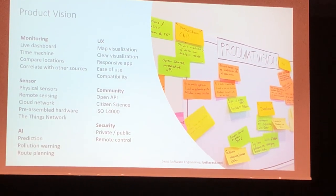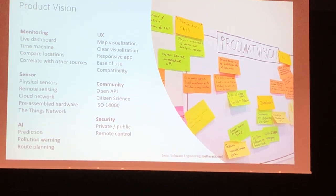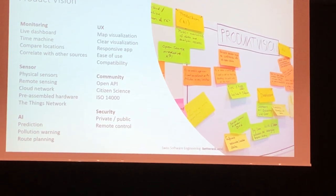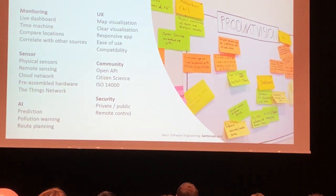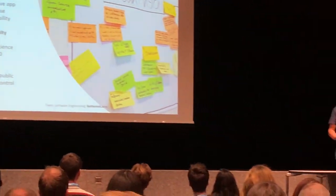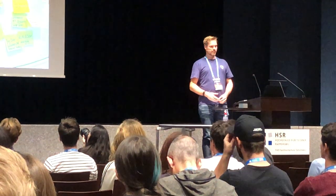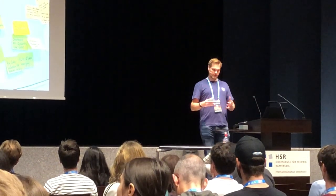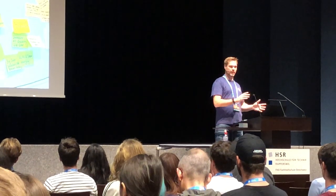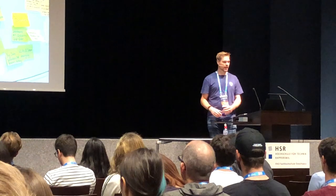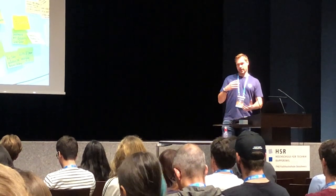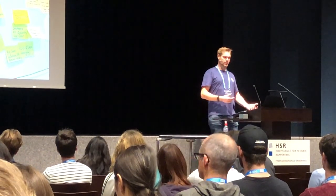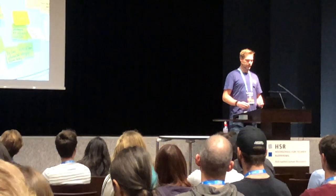Lots of brainstorming, lots of wild ideas going back and forth — way too many ideas to write down. But in essence, it came down to: we want to monitor air pollution, have that information live and available to the user, and also see the evolution of pollution over time — like a time machine where you can see what pollution at a particular location was. We want to compare locations and correlate with other sources like traffic data or weather.